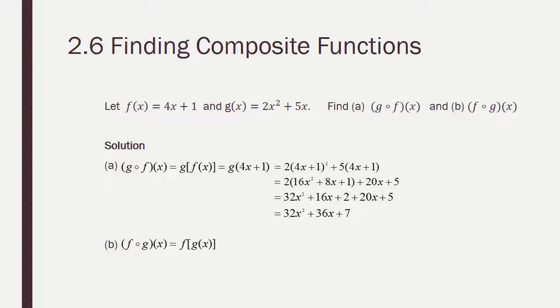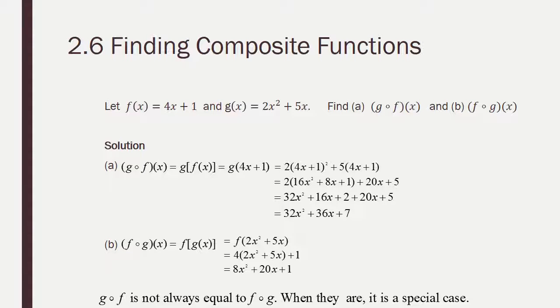For part b, we're going to do the same thing, except we're going to do g into f. So, we're going to take 2x squared plus 5x, and we're going to put that in for the x in 4x plus 1. So, you can see we've started there, and we're going to distribute the 4, and we have 8x squared plus 20x plus 1. Notice that f of g of x and g of f of x are not always equal. They can be, but that's a very special case.